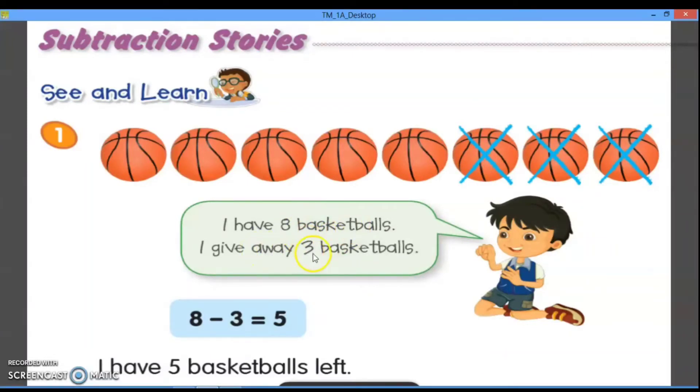I give away three basketballs. Jadi, Rafi punya delapan bola basket. Nah, tiga bola basketnya ini, dia berikan untuk hadiah kepada orang lain. Maka, dari delapan basket ini, tiga basketnya kita beri tanda silang. Karena, tiga basketnya sudah diberikan kepada orang lain.